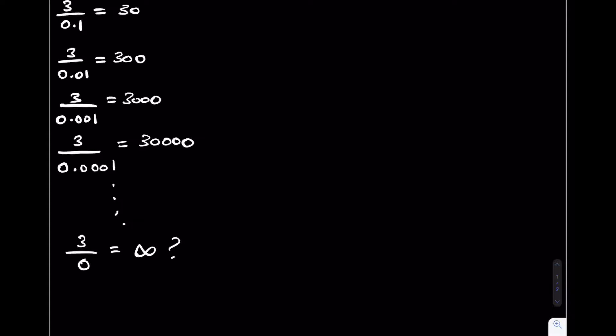Let's have a look at 3 divided by minus 0.1. This is equal to minus 30. I'm going to now approach 0 in the denominator from the negative side.